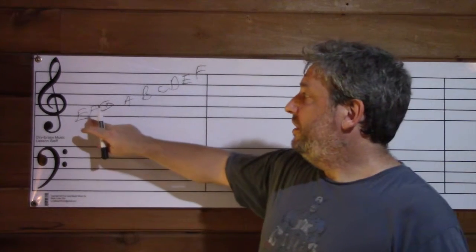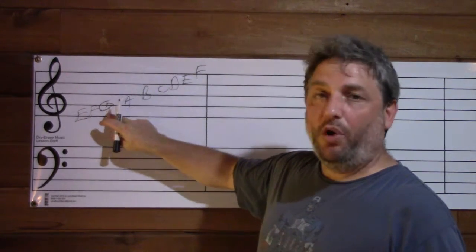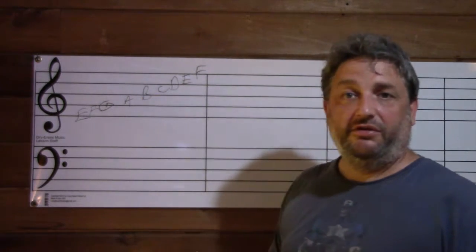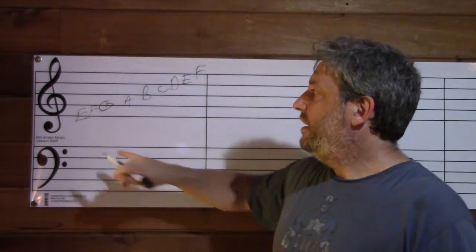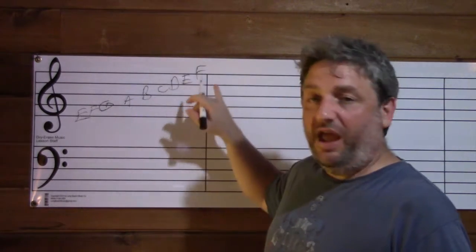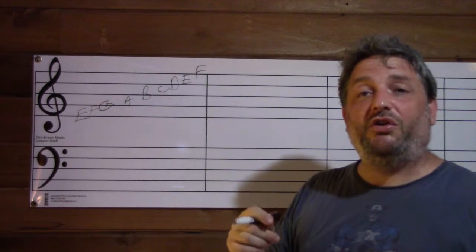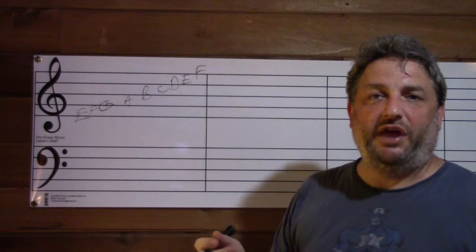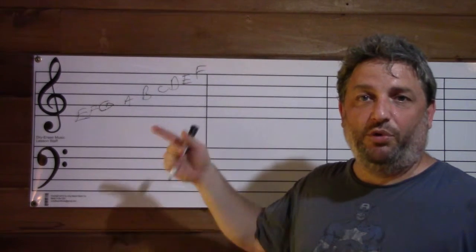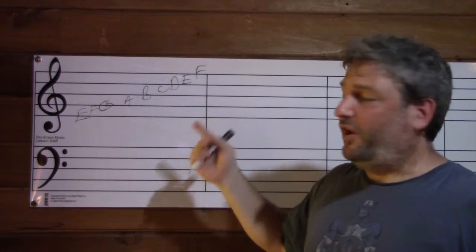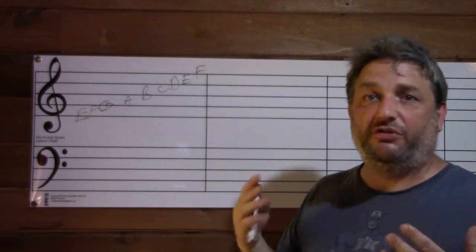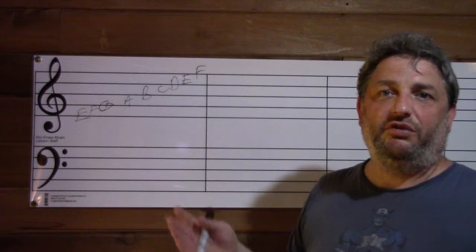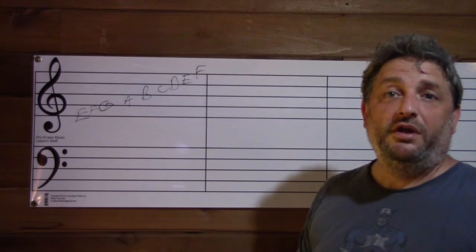You'll notice that the spaces form a word: F, A, C, E. So that's one way to remember it — "face" — that's the spaces starting at the bottom. The lines are E, G, B, D, F. We can use what's called a mnemonic device, where you assign a word to each letter. When I was a little kid it was "every good boy does fine." You can use any type of device you want to help you remember this. Eventually you're just going to know what all the lines and spaces are through practice and work.